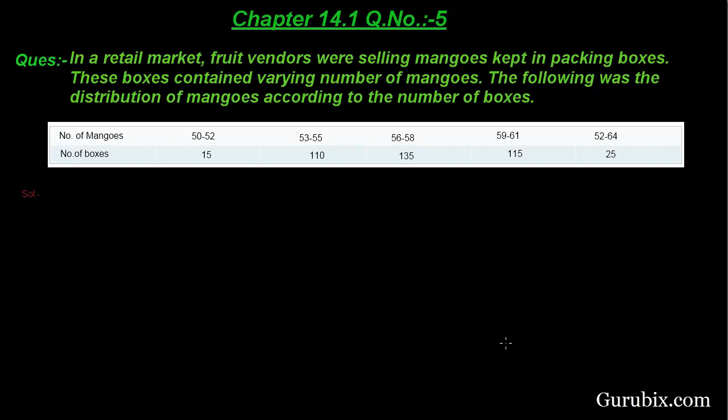The question says that in a retail market, fruit vendors were selling mangoes kept in packing boxes. These boxes contained varying number of mangoes. The following was the distribution of mangoes according to the number of boxes. In this table, the first row is number of mangoes and the second row is number of boxes which is our fi. In first row, the number of mangoes are in the form of class interval has class size of 2. Now, let's find the solution.